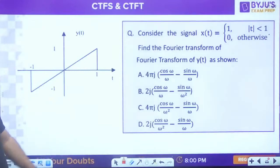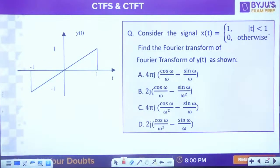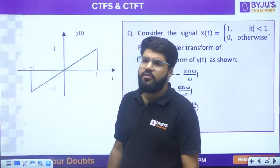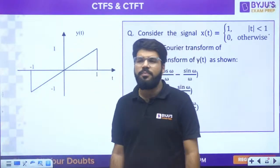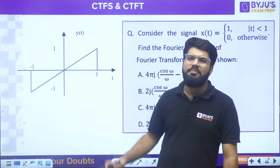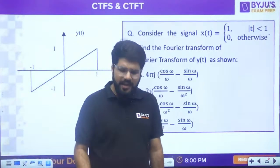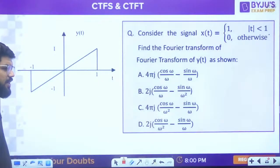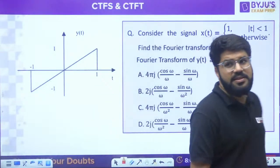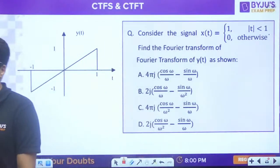Next question: same x(t) = 1 for |t| < 1. Find the Fourier transform of y(t) as shown - a straight line (ramp having slope 1) between -1 and 1. Height = 1, base = 1, slope = 1. The equation is y(t) = t for -1 < t < 1. This can be written as t × 1 where that '1' is precisely the previous signal x(t). So y(t) = t·x(t).